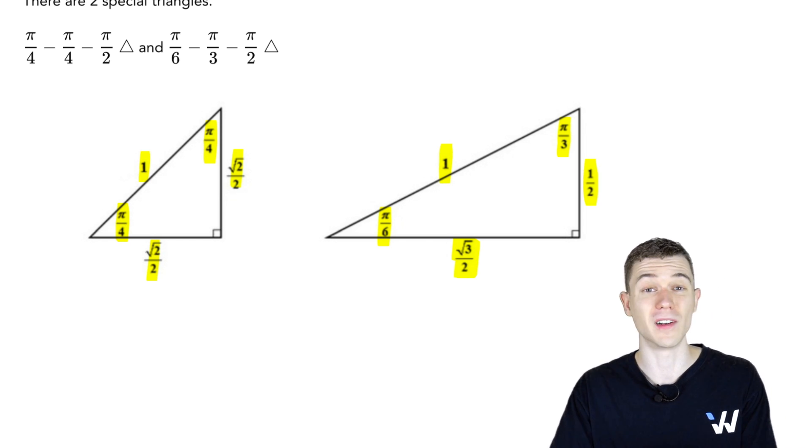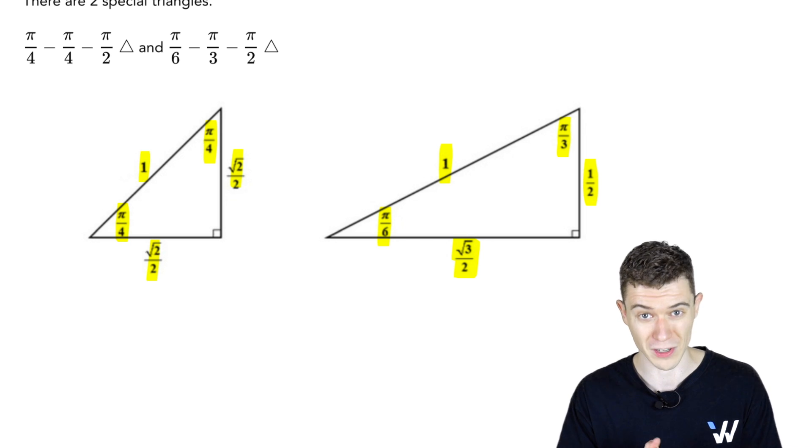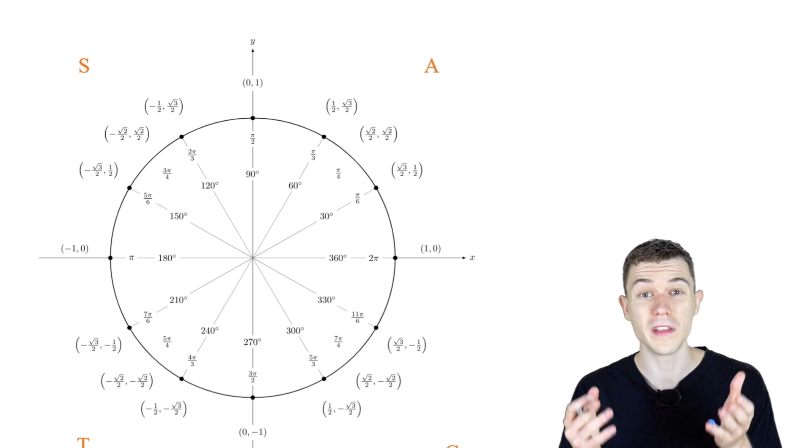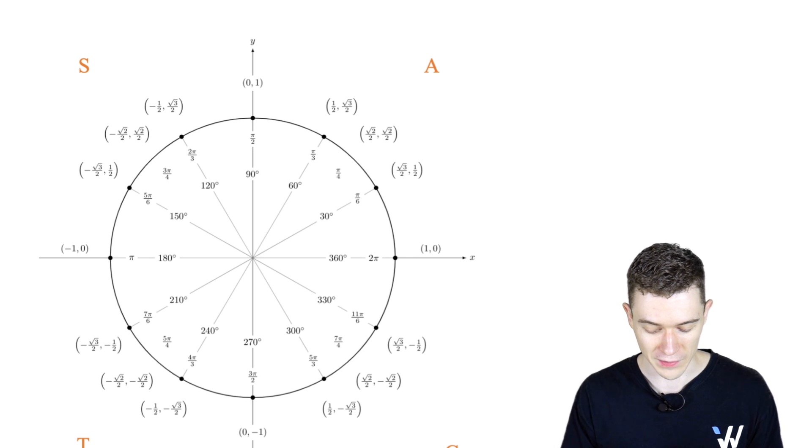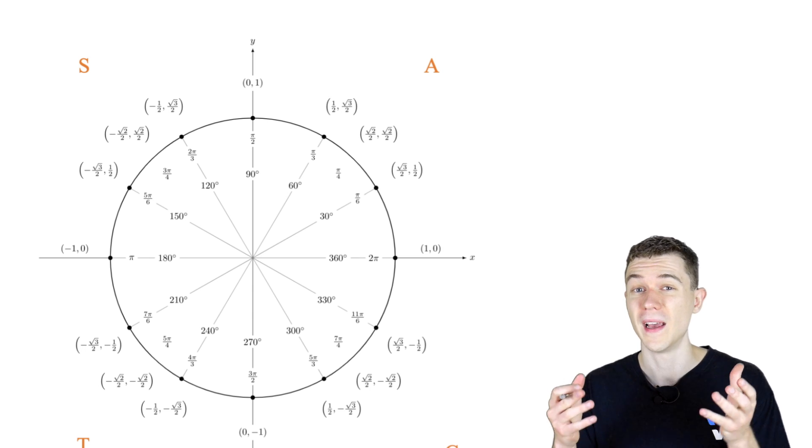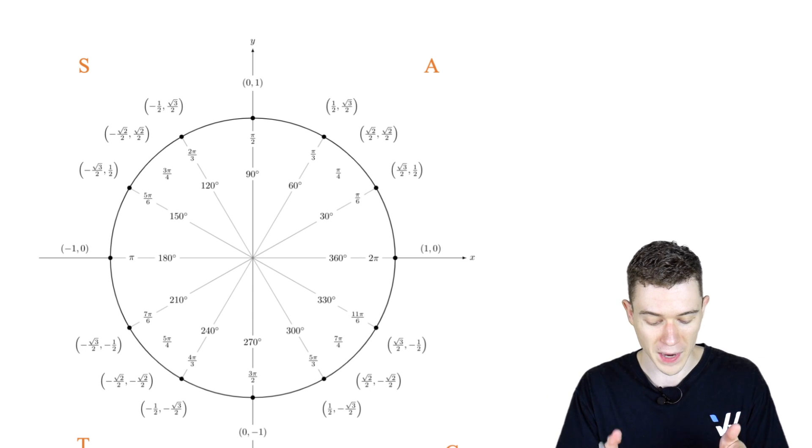Let's use these triangles to compute some trig values. Now, if we overlay these triangles multiple times in different quadrants on the unit circle, we get these values. We're seeing those 1 halves, root 2s over 2s, and root 3s over 2s appear in many different places.